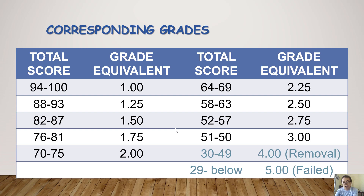Below 50% is a removal grade of 4.0, and below 15% results in a grade of 5.0. For the removal exam, if you pass, your grade becomes 3.0; if you fail, your grade becomes 5.0. The passing threshold for the removal exam is only 50%.